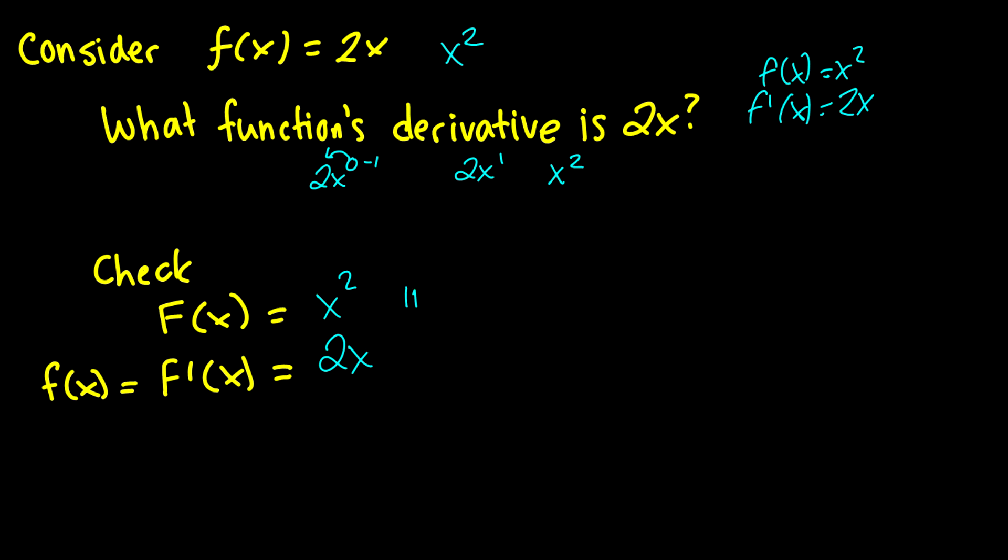Therefore, we say that the antiderivative is x^2 + C, where C is some constant.